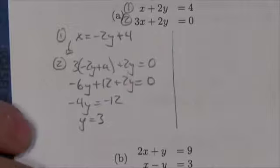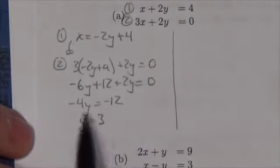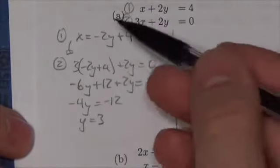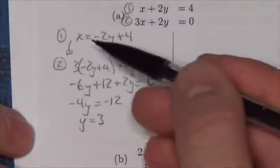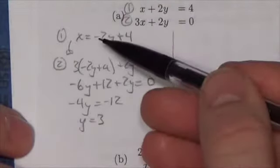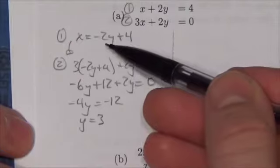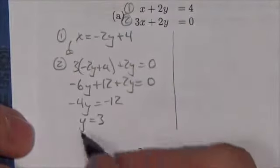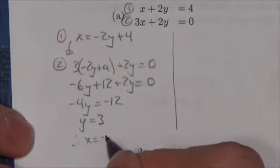Now with substitution, once you know what y is, you just go back up to this equation because you've already got x isolated. So y equals 3 means negative 2 times 3 is negative 6 plus 4 is negative 2. Therefore x equals negative 2.